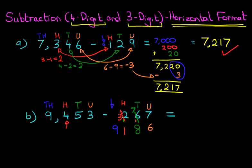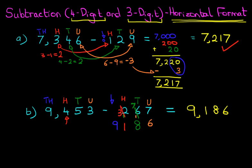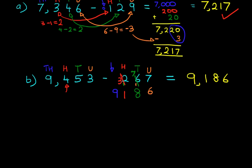That is our answer. 9186. Now, as you're doing this, if you're unsure about this, what you can do is add the two sets of numbers and see if they equal the number you began with. Let's do this.